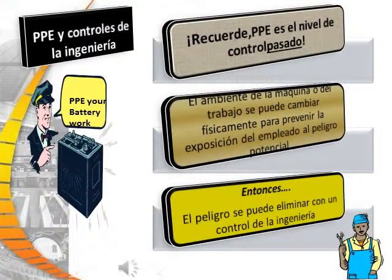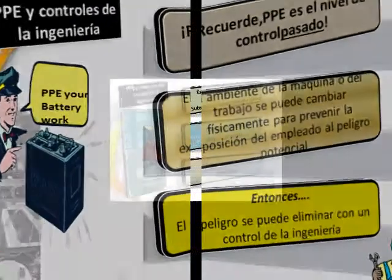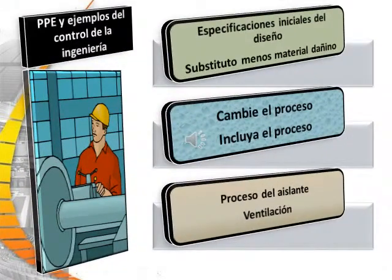Remember, PPE is the last level of control. The machine or work environment can be physically changed to prevent employee exposure to a potential hazard. The hazard can be eliminated with an engineering control first and foremost. Initial design specifications, substitute less harmful material, change the process, enclose the process, isolate the process, or provide ventilation are all examples of engineering controls versus Personal Protective Equipment.